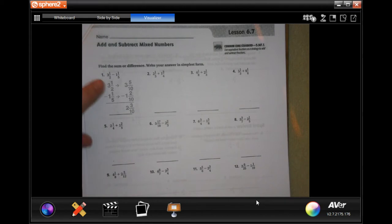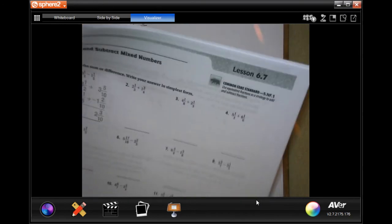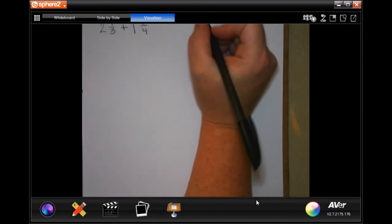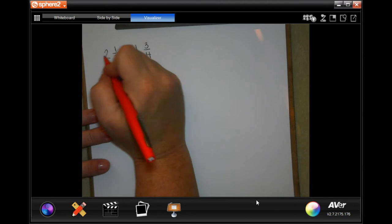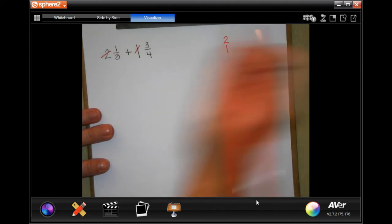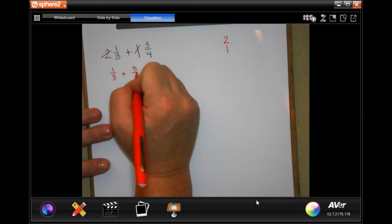These ones are going to be just like your other ones, except now we have a whole number too. When we are adding, I just rewrote the problem on here. I'm going to take my whole numbers and put them over to the side. Then we just have 1/3 and 3/4 we're adding.